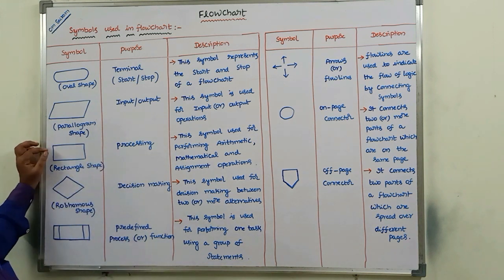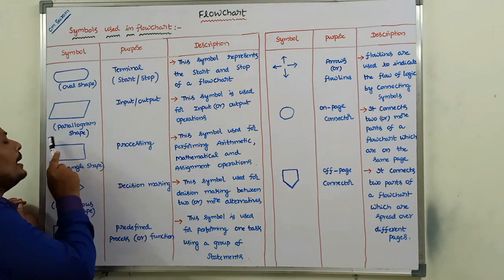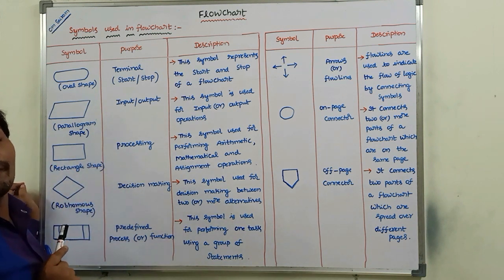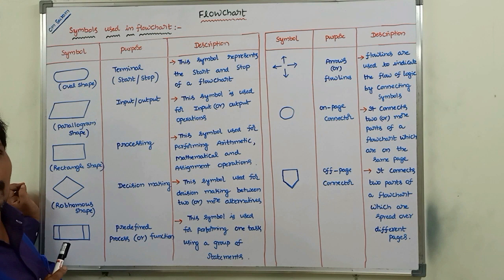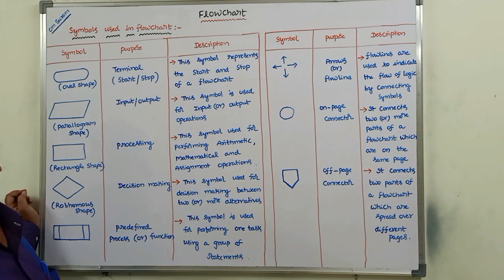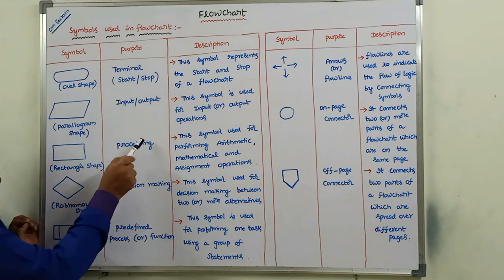The third one is the processing symbol. The processing symbol is in rectangle shape. This symbol is used for performing arithmetic operations, mathematical operations, and assignment operations. Whenever we are performing arithmetic operations such as addition, subtraction, multiplication, division, modular division, and assignment operations, we use this processing symbol.